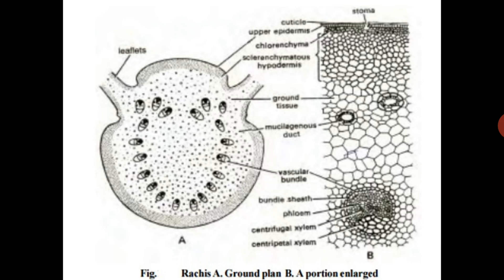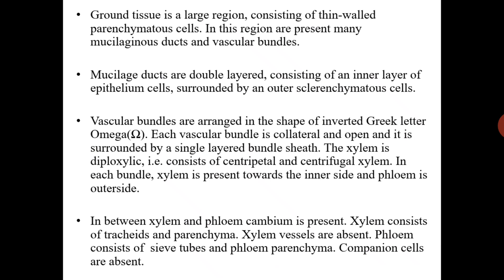In the diagram of the rachis, you can see: upper epidermis, chlorenchyma, sclerenchymatous hypodermis, ground tissue, mucilaginous ducts, vascular bundles, bundle sheath, phloem, centrifugal xylem, and centripetal xylem. The ground tissue is a large region consisting of thin-walled parenchymatous cells, within which are present many mucilaginous ducts and vascular bundles. Mucilaginous ducts are double-layered, consisting of an inner layer of epithelial cells surrounded by outer sclerenchymatous cells. The vascular bundles are arranged in the shape of an inverted Greek letter omega.